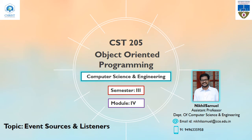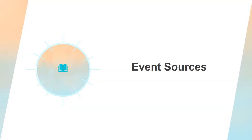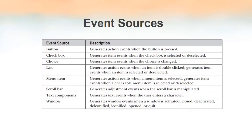Welcome to the video lecture series on object oriented programming. In this video lecture we'll be discussing about event sources and listeners. First we will discuss about event sources. Event sources in Java are represented by classes. A source is something that generates an event whenever its state gets changed. Some of the sources available in Java are button, checkbox, list, choice, etc.